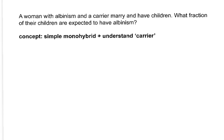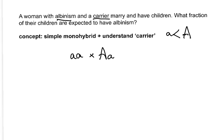A woman with albinism and a carrier marry and have children. Even though the question doesn't tell you whether it's autosomal or dominant/recessive, the word 'carrier' tells you a lot. It can't be X-linked because men can't be carriers of X-linked mutations — they only have one X. A carrier by definition is the heterozygote for a recessive trait. So she must be homozygous recessive, and he is heterozygous. We'll call little 'a' the disease allele, recessive to the normal non-albinism allele.